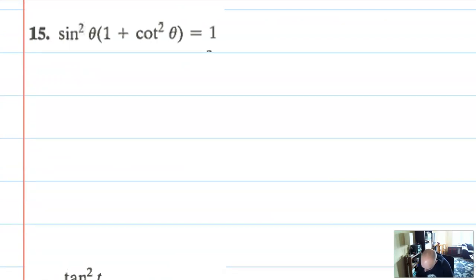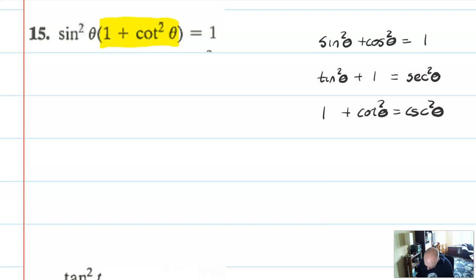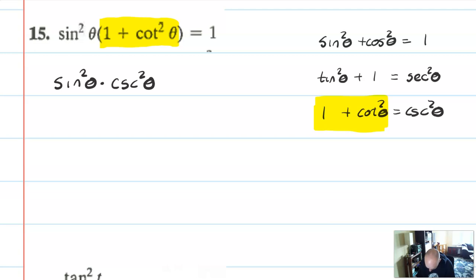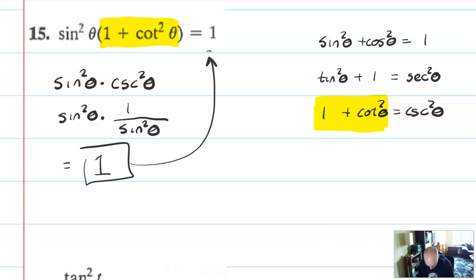Next: sine squared theta times one plus cotangent squared theta equals one. Since we're equaling one, I expect something will simplify. I also see this one plus cotangent squared, so I'm going to look up the Pythagorean identities. That highlighted part is actually identical to one of the main Pythagorean identities — one plus cotangent squared equals cosecant squared — so I substitute that in. I have sine squared theta times cosecant squared theta, which is sine squared theta times one over sine squared theta, and that's just equal to one. Problem solved.